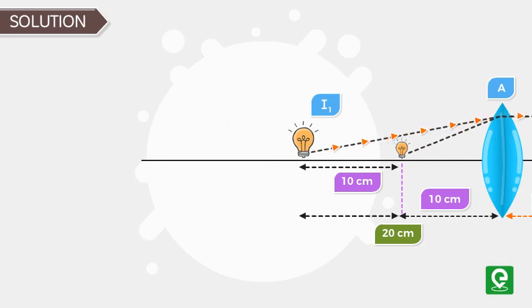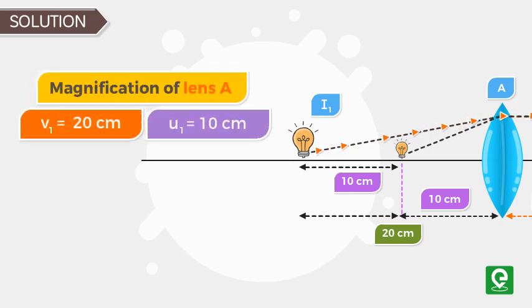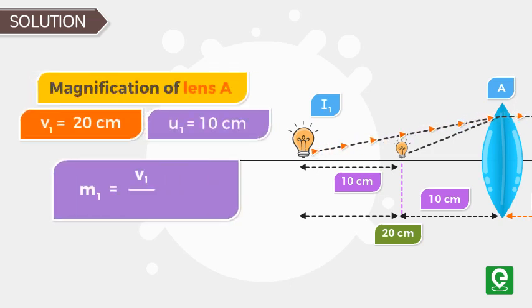In the second part of the question we have to find magnification of combination of lenses. The magnification of lens A is given as V1 divided by U1. Here V1 is 20 and U1 is 10, therefore the magnification of lens A, M1, is equal to 2.